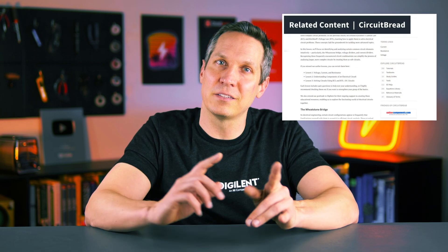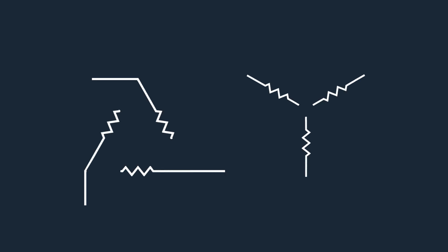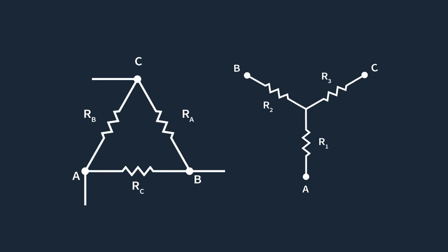Using our knowledge of voltage divider circuits, we can derive the math behind the Wheatstone bridge, but that is covered in Gayathri's written lesson on circuitbread.com. In electrical circuits, delta and Y configurations are common circuit arrangements that appear frequently, particularly in three-phase power systems. Understanding these configurations and their conversions is essential for simplifying circuit analysis.